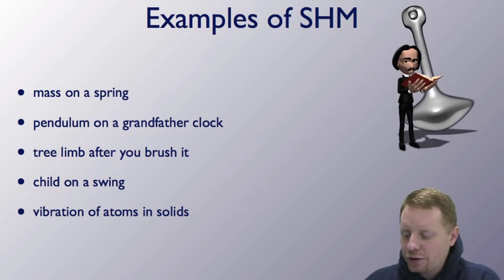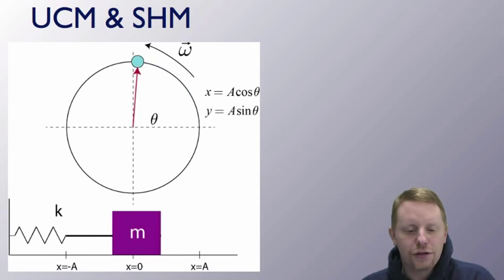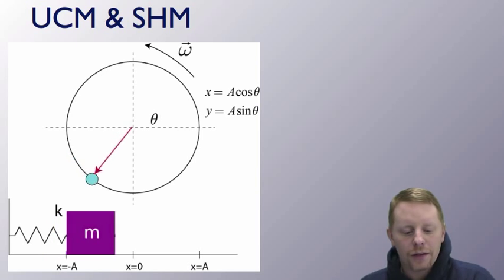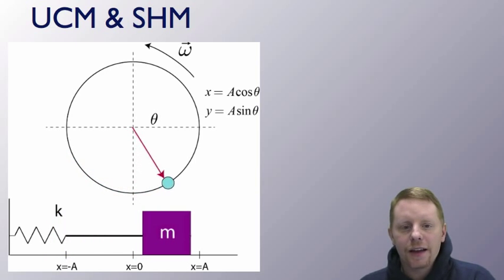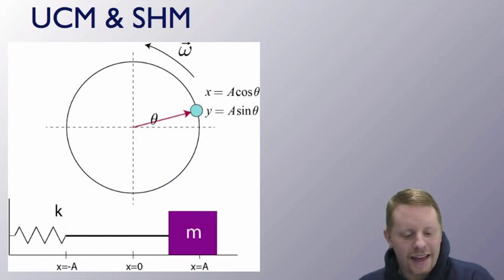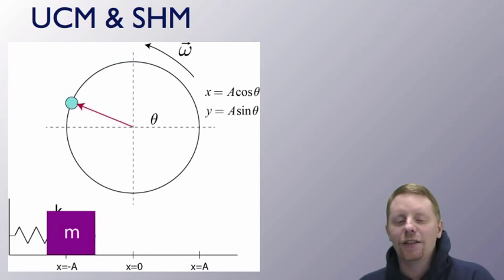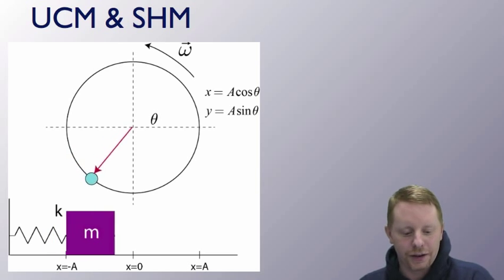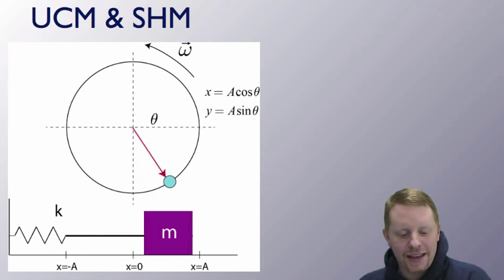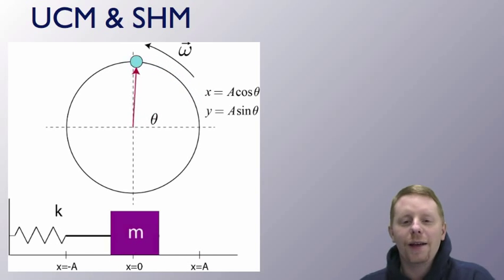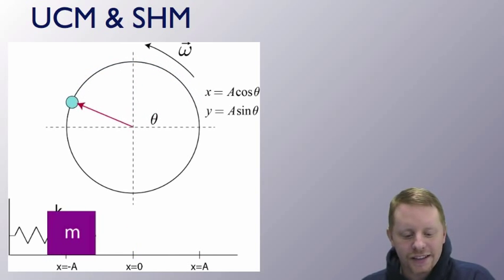Now simple harmonic motion is very closely related to uniform circular motion. Consider an object that is moving in a horizontal circle of radius a at a constant angular velocity omega, as shown here. At any given point in time, the x position can be described by a cosine theta and the y position could be described by a sine theta.